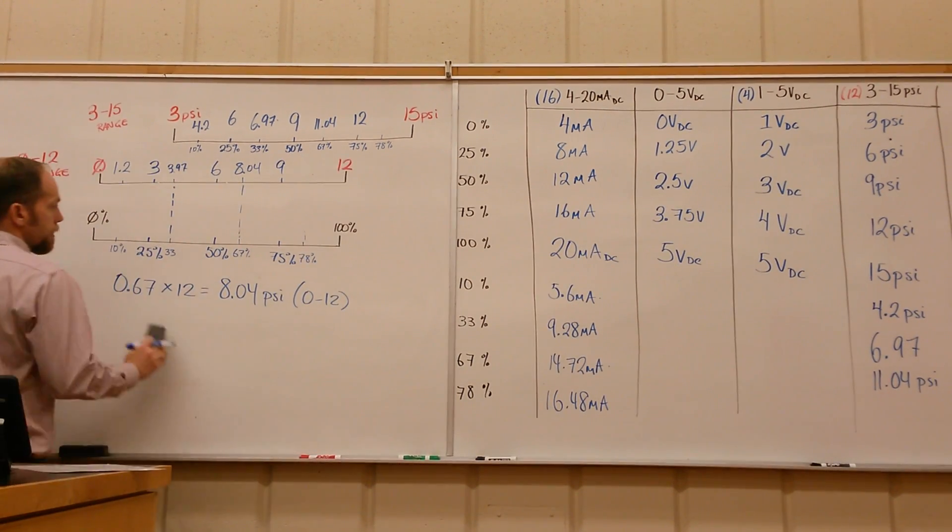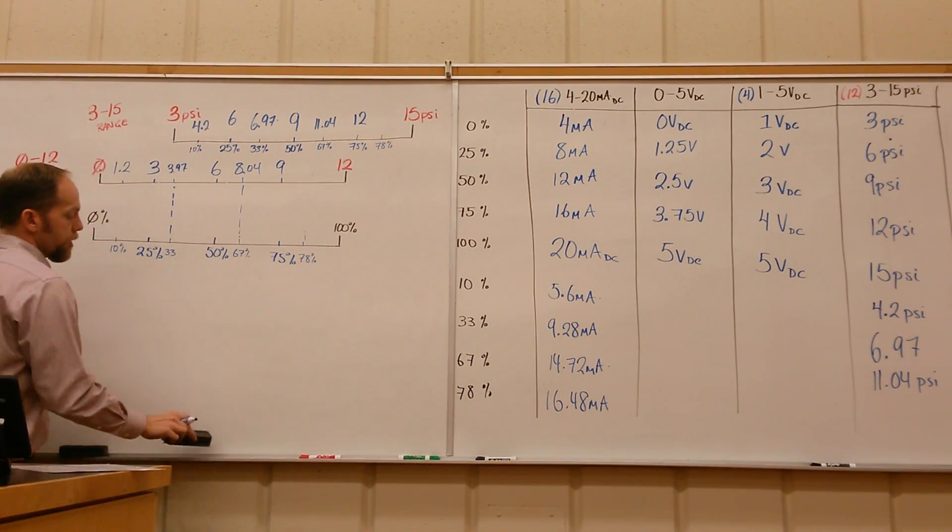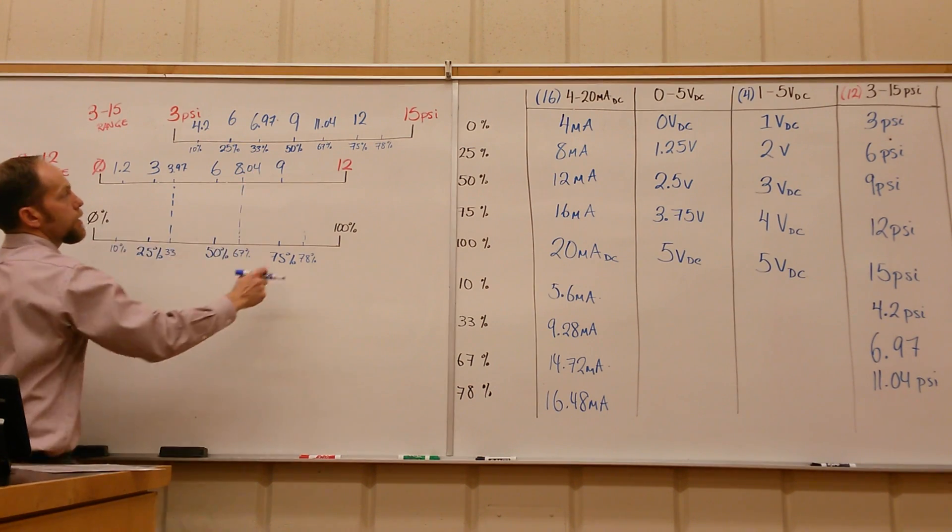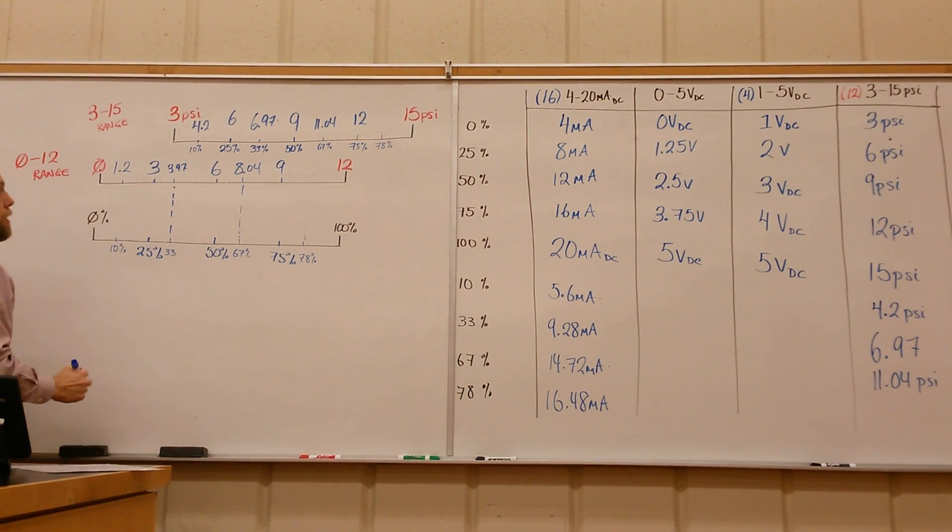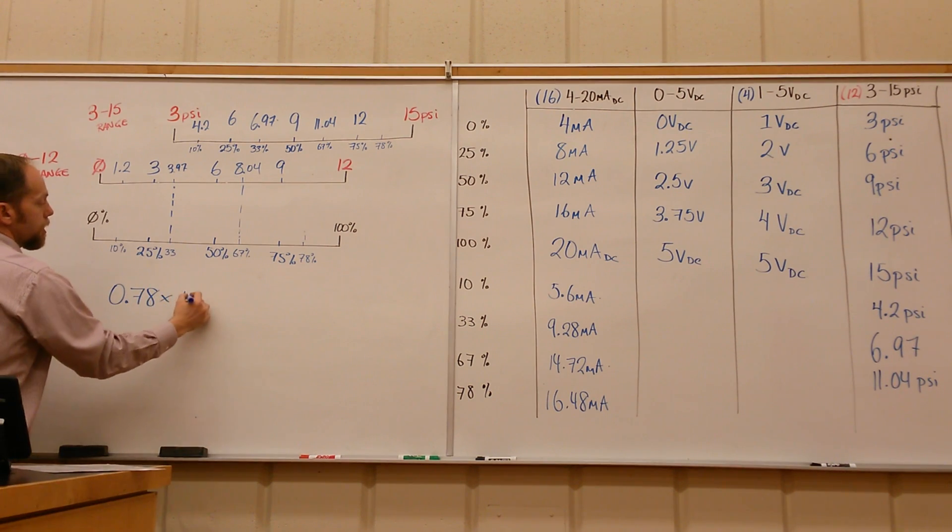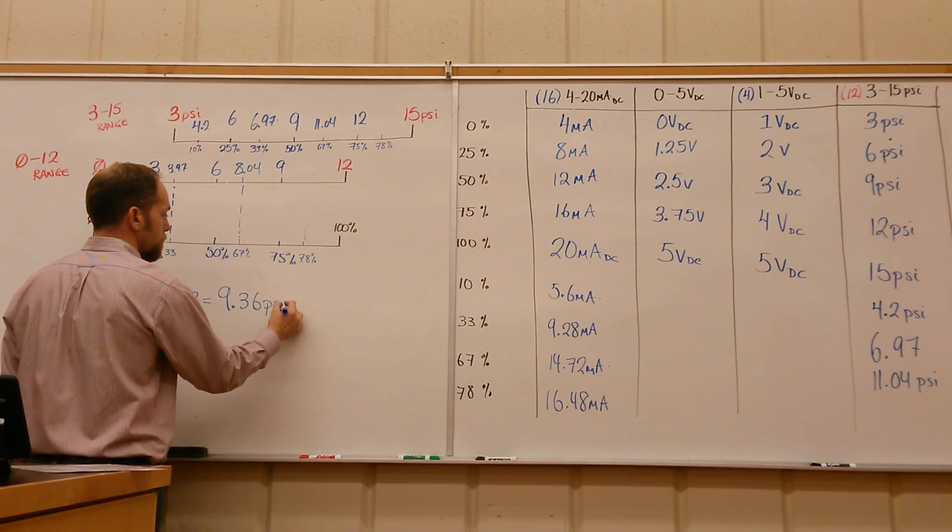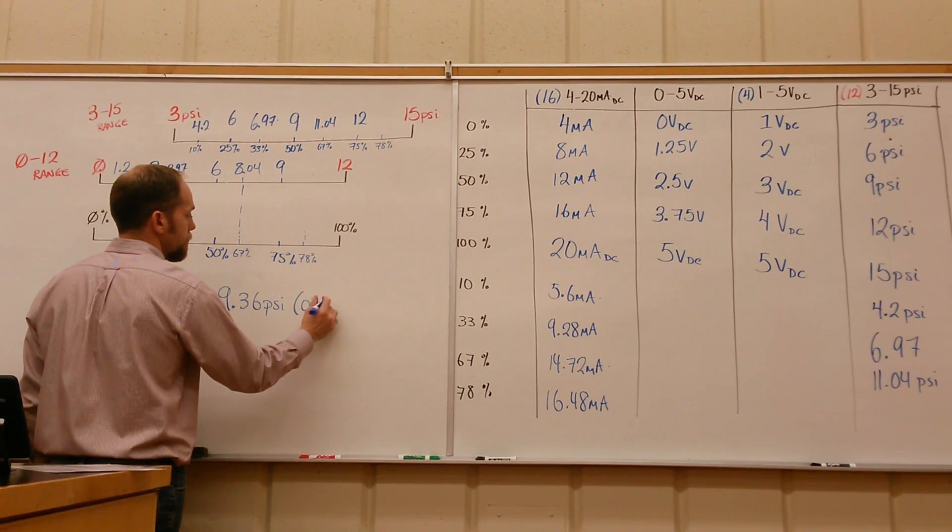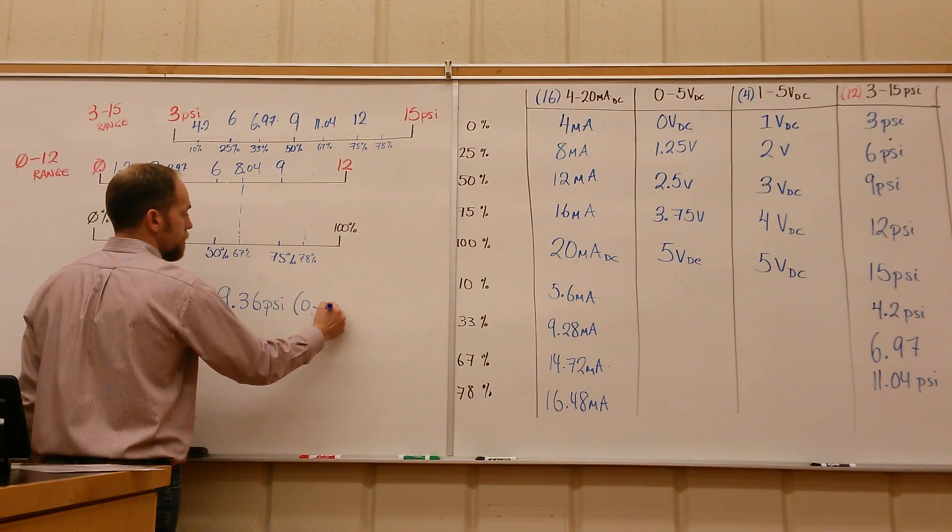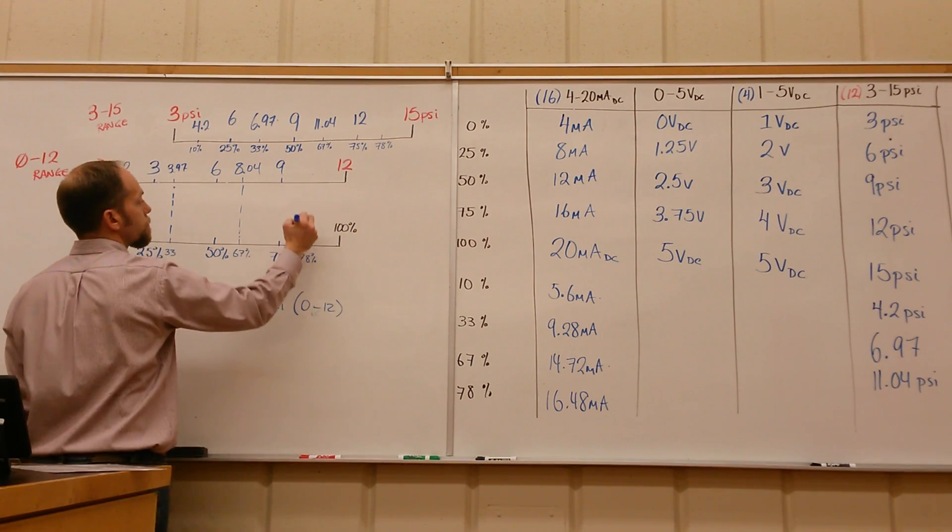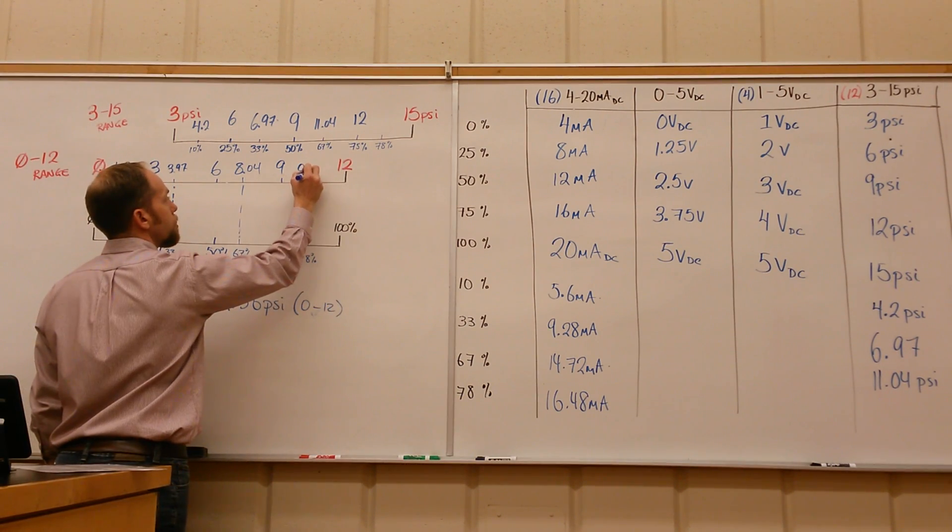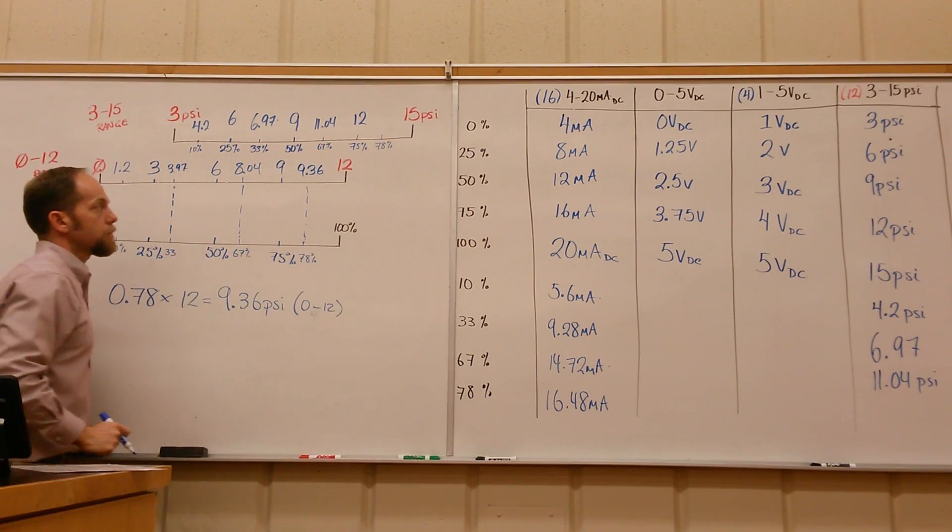Finally, the 78. 78 should be just about 9 on the 0 to 12, and just about 12 on the 3 to 15. So we'll take 0.78 times the 12, that gives us 9.36.